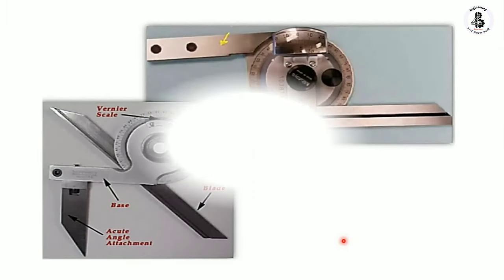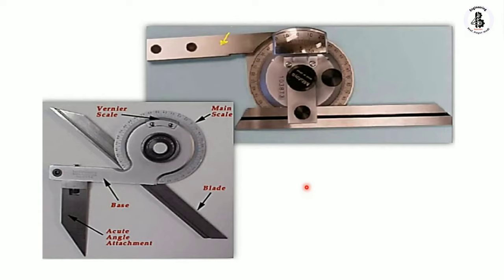Now we will see the actual bevel protractor. This is my blade edge, this is my main scale, this is my vernier scale with some zooming facility, this is my locking screw, and this is one of the adjustment blades. This is without the acute angle attachment. The second figure shows the instrument with an accurate angle attachment — base blade, main scale, and vernier scale — so you can easily adjust two surfaces of your component and take the measurement of an angle.